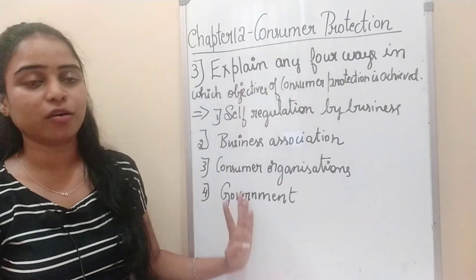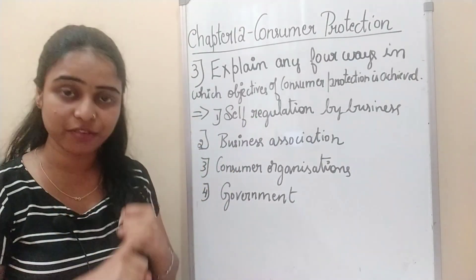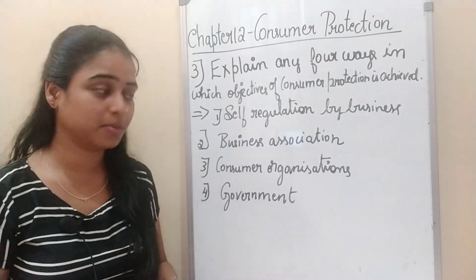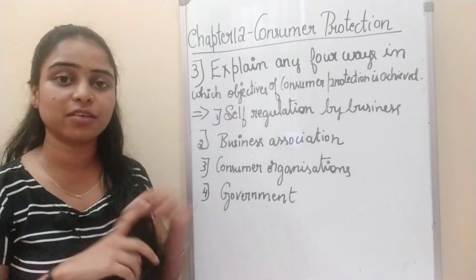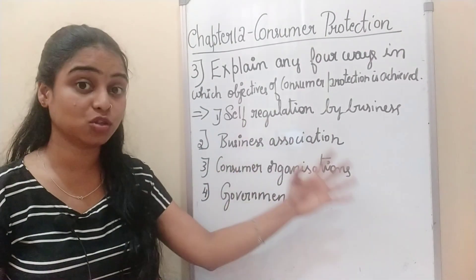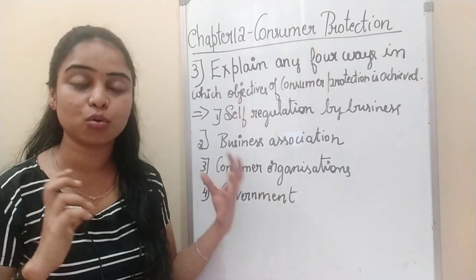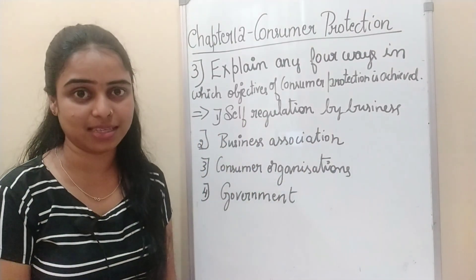So these are the four ways in which consumer protection is achieved: one, self-regulation by the business; two, business associations; three, consumer organizations; and four, through the government itself.